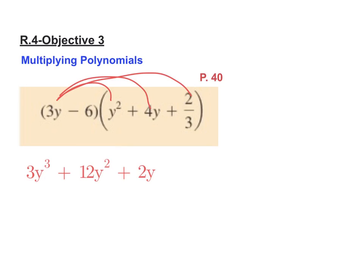The second part now is taking negative six times all three of them and that's where my six things will come from. So I'll get negative 6y squared minus 24y minus 4.